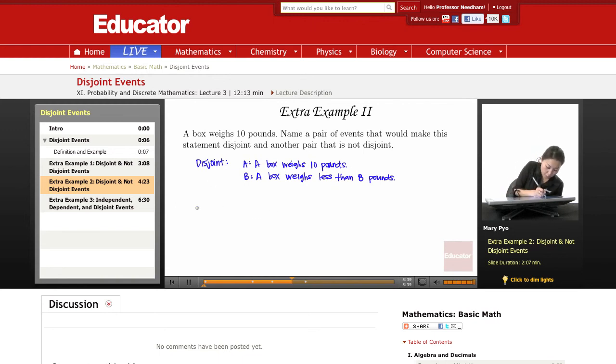For not disjoint, I can say my first statement, a box weighs more than 9 pounds. And then for my next statement, a box weighs less than 11 pounds.